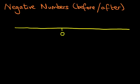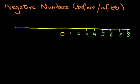Our number line has got zero in the middle. And on the right hand side, we're going to write down 1, 2, 3, 4, 5, 6, 7, 8. So our number line goes from 0 to 8.